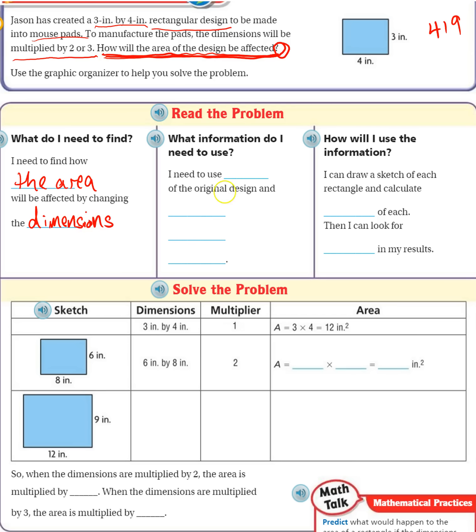What information do I need to use? I need to use the dimensions of the original design. Think of that as like the model. The dimensions of the original design and what it's going to be multiplied by. And in this case, it's going to be multiplied by 2 or 3.